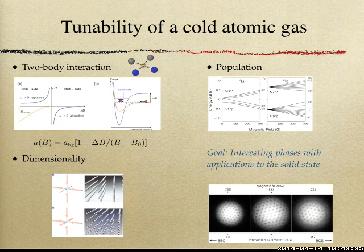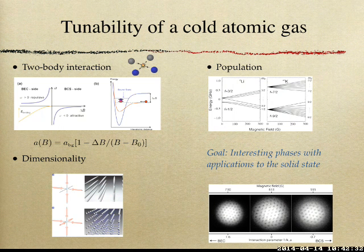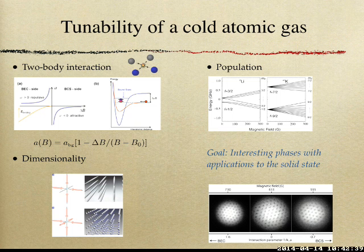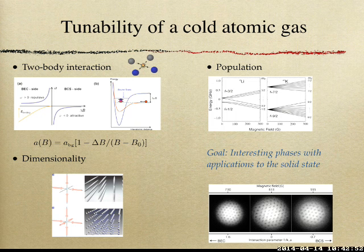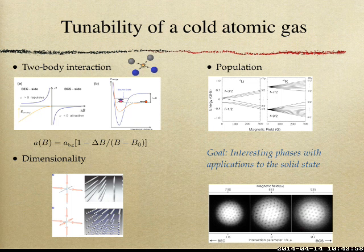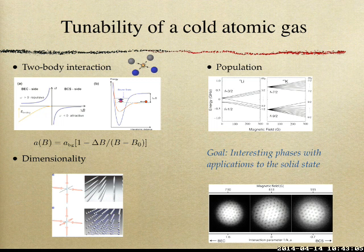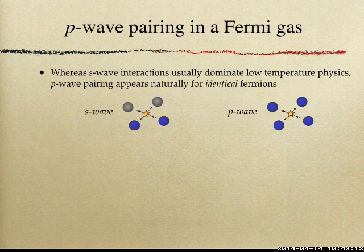From my perspective, the goal with these quantum gases is to create interesting phases with potential applications to the solid state. Going from a two-body interaction that is universal, we have universally emerging physics at the many-body level. For instance, here we have BEC-to-BCS crossover, and the fact that this system is superfluid is seen by rotating the gas, which creates vortices visible all across the crossover.